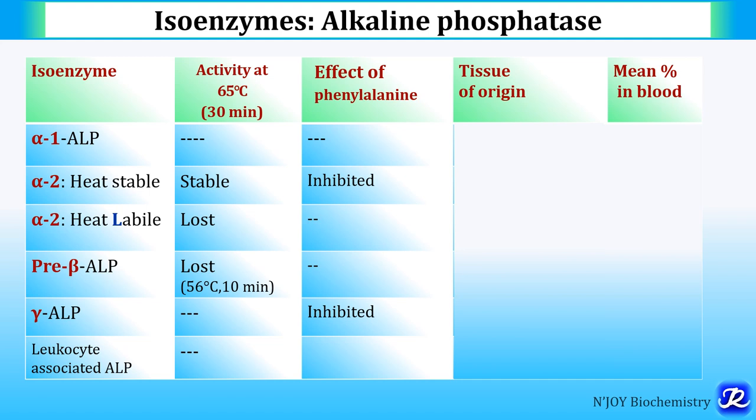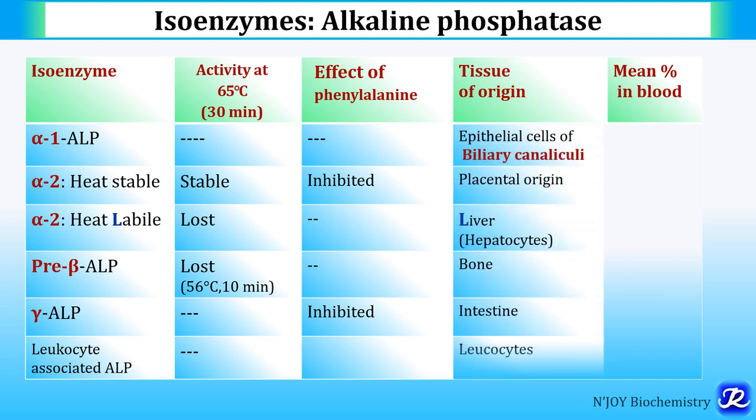Tissue of origin: Alpha-1 is present in the epithelial cells of biliary canaliculi. Alpha-2 heat stable is of placental origin. Alpha-2 heat labile (L for labile/liver) is present in hepatocytes. Pre-beta ALP (B for bone) is present in bone. Gamma alkaline phosphatase is present in the intestine, and leukocyte-associated alkaline phosphatase is present in leukocytes.